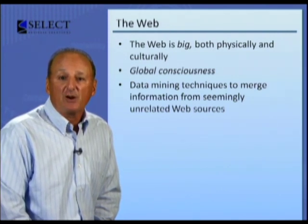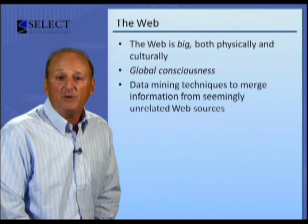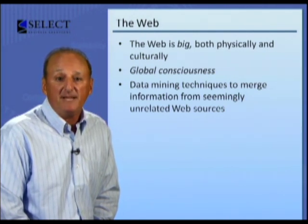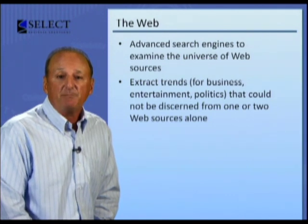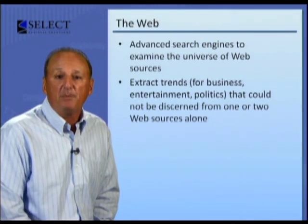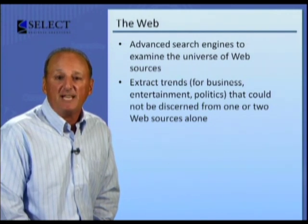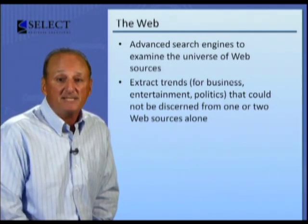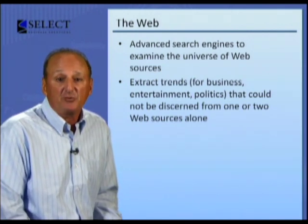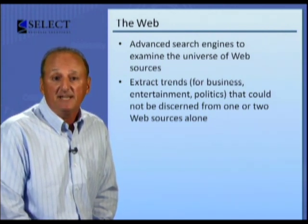Applications of this nature are often referred to as mashups. For example, information acquired from Google Maps can be combined with information from your website database to create a city map that shows the location of every installation of your products in a city. Other aspects of global consciousness are intriguing but much more difficult to achieve. For example, it's now possible for advanced search engines to examine the universe of web sources — blogs, online media, chat rooms, business data sources, online technical journals, and entertainment sites — all in an effort to extract trends for business, entertainment, or politics that could not be discerned from one or two web sources alone.